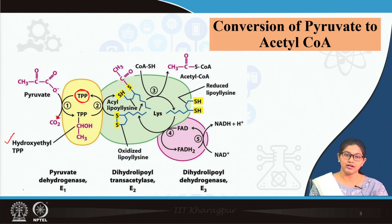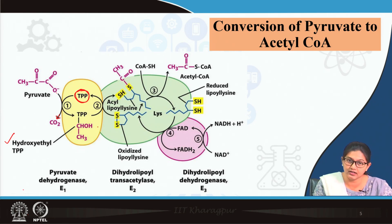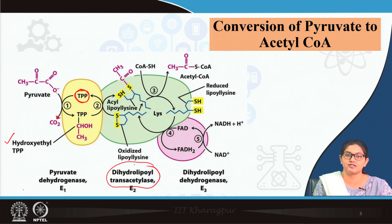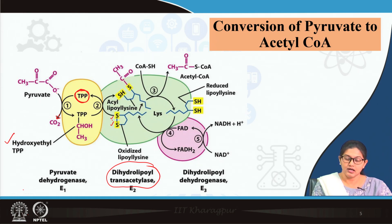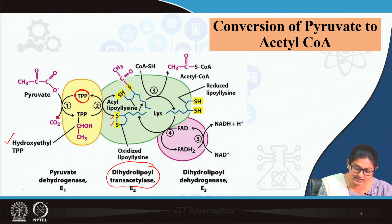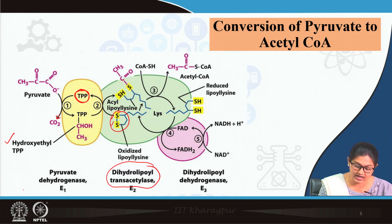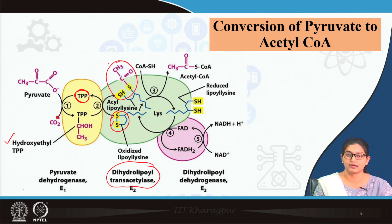In the second reaction, with the help of pyruvate dehydrogenase, the acetyl group is transferred to the core enzyme — dihydrolipoyl transacetylase — which has two sulfhydryl groups. The acetyl group is taken up by the oxidized lipoyl-lysine group of the core enzyme, and after taking the acetyl group from TPP, it forms acetyl-lipoyl-lysine.